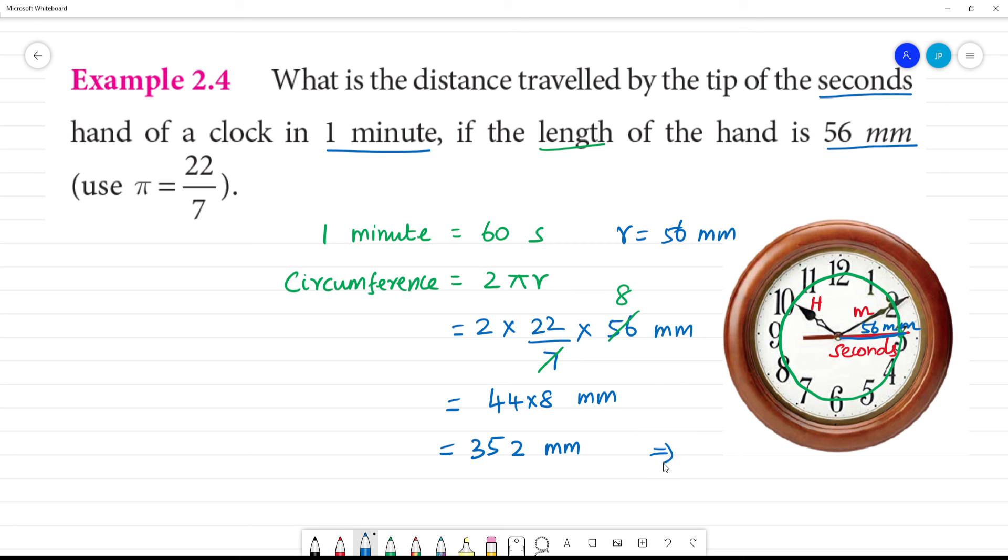Or we can write it as 35.2 centimeter. Clear. 10 millimeter is equal to 1 centimeter.